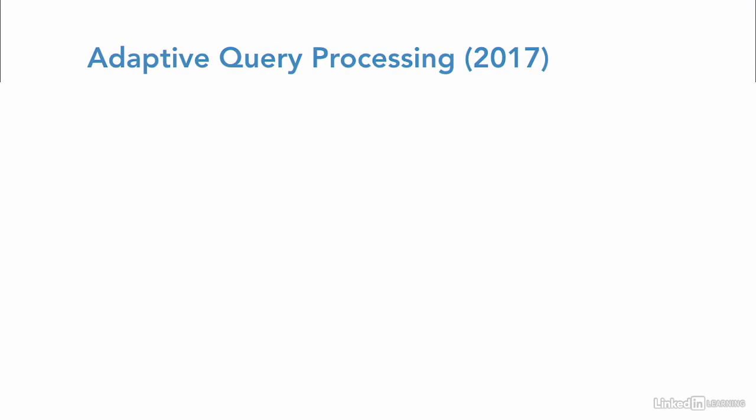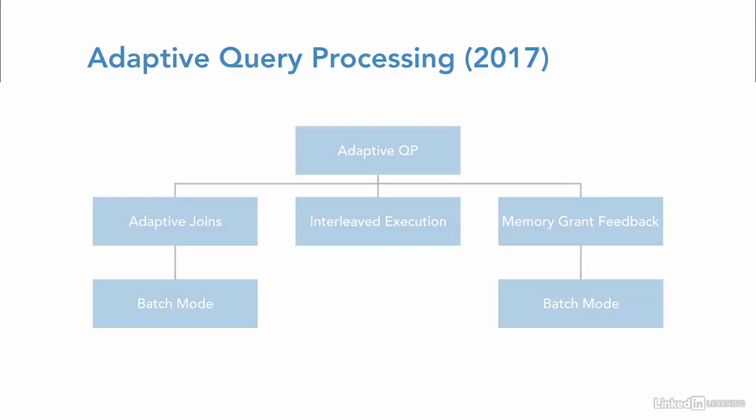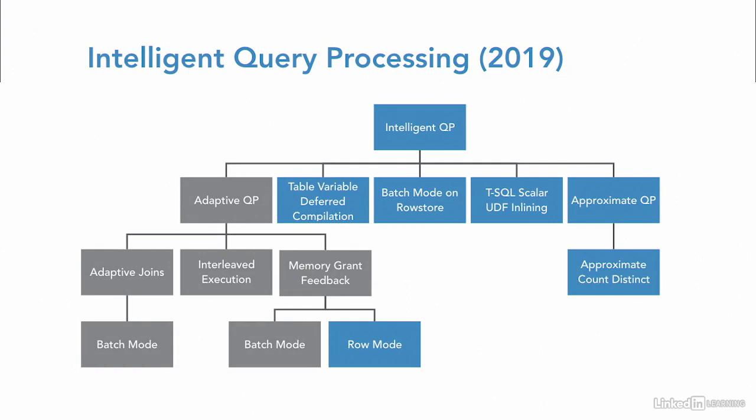Intelligent Query Processing builds on a number of features that were previously introduced under the heading of Adaptive Query Processing in SQL Server 2017. With the 2019 release, those features are expanded upon and integrated under the new feature family called Intelligent Query Processing.